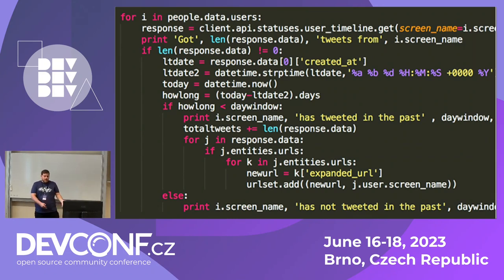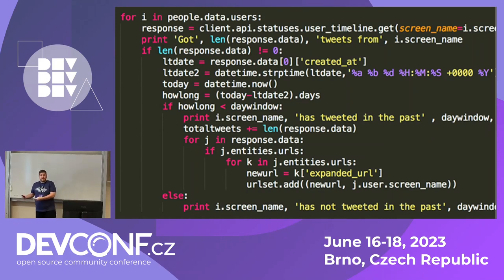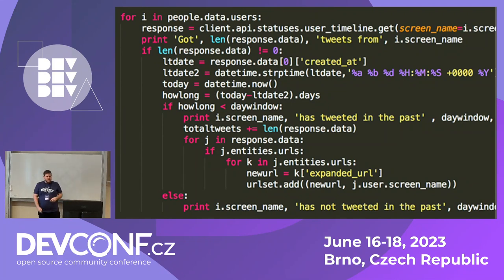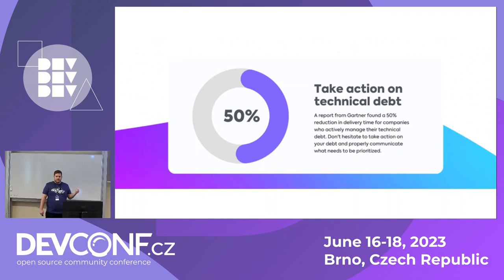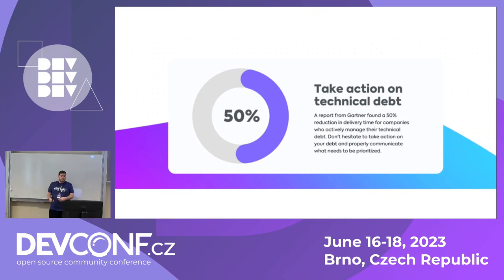Not only quality of engineering gets affected — the business itself gets impacted, because we need to quickly deliver in order to achieve business goals. A Gartner report tells us that actively managing technical debt leads to a 50% reduction in delivery time. So I guess we have plenty of good reasons to keep technical debt in check.